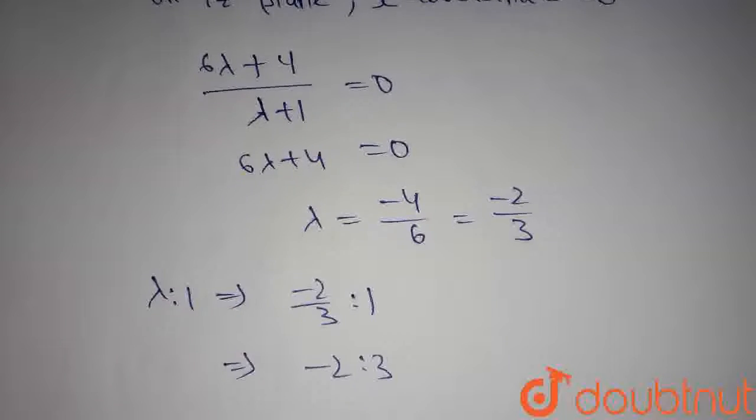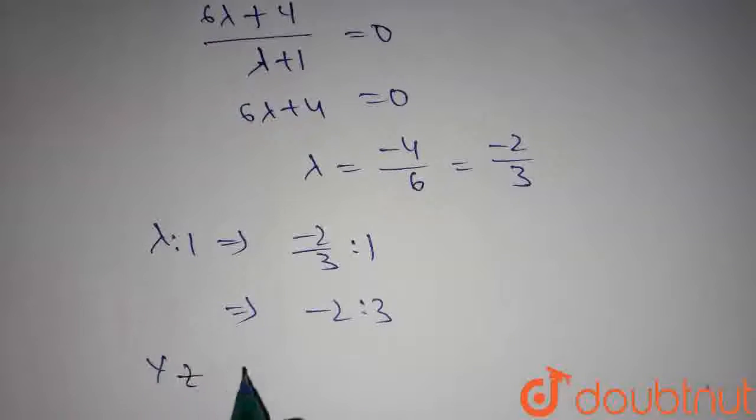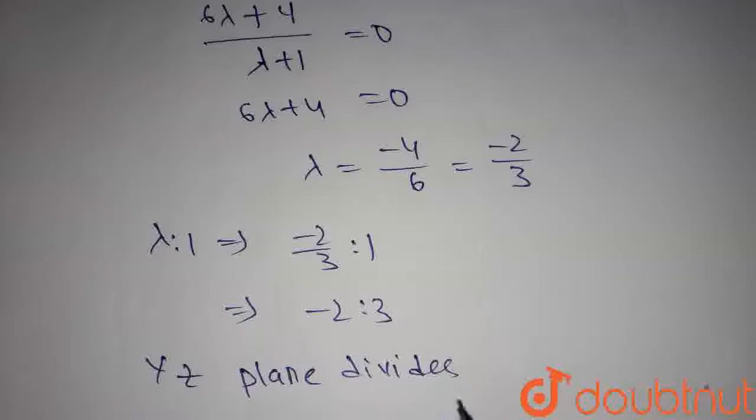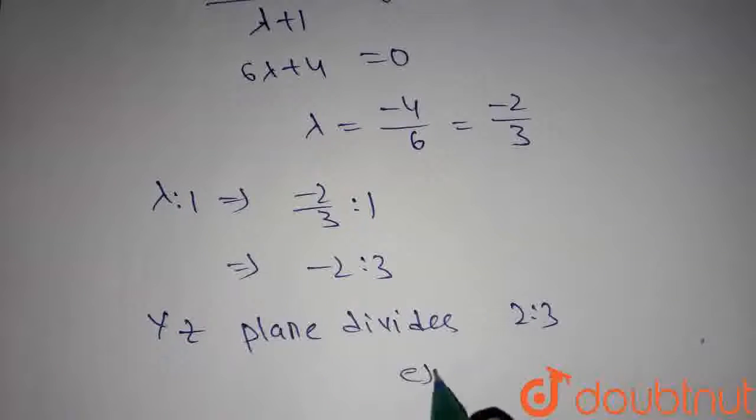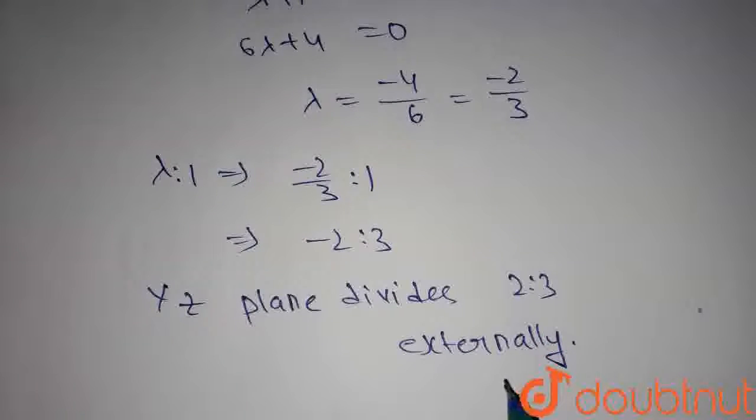So, the yz plane divides the line joining the given two points in the ratio 2 is to 3 externally. Since we have a negative sign here, it divides the line segment AB in the ratio 2 is to 3 externally.